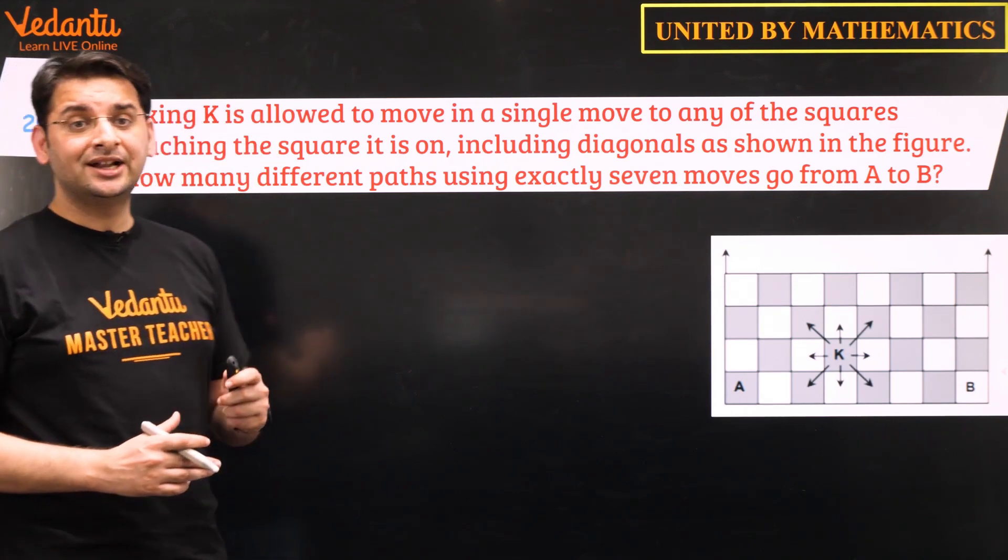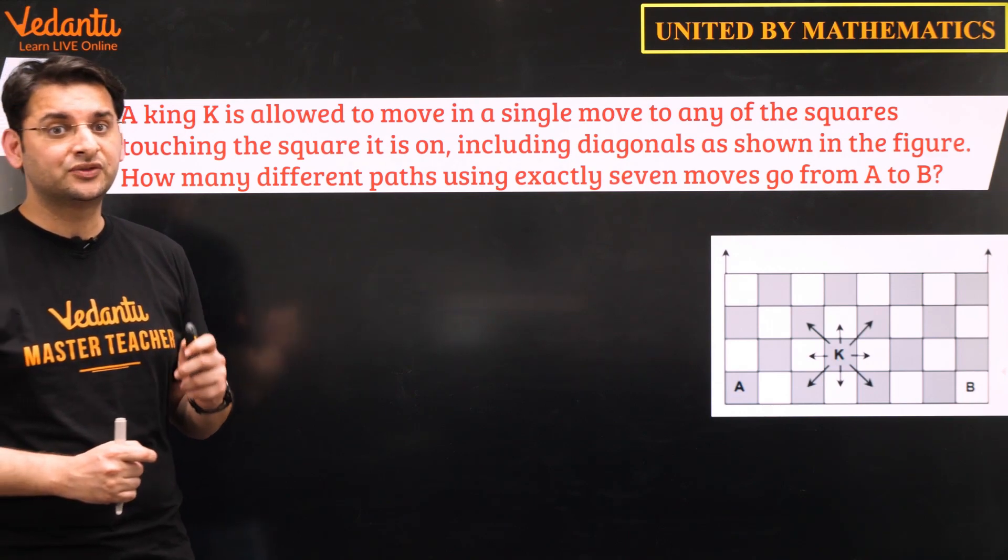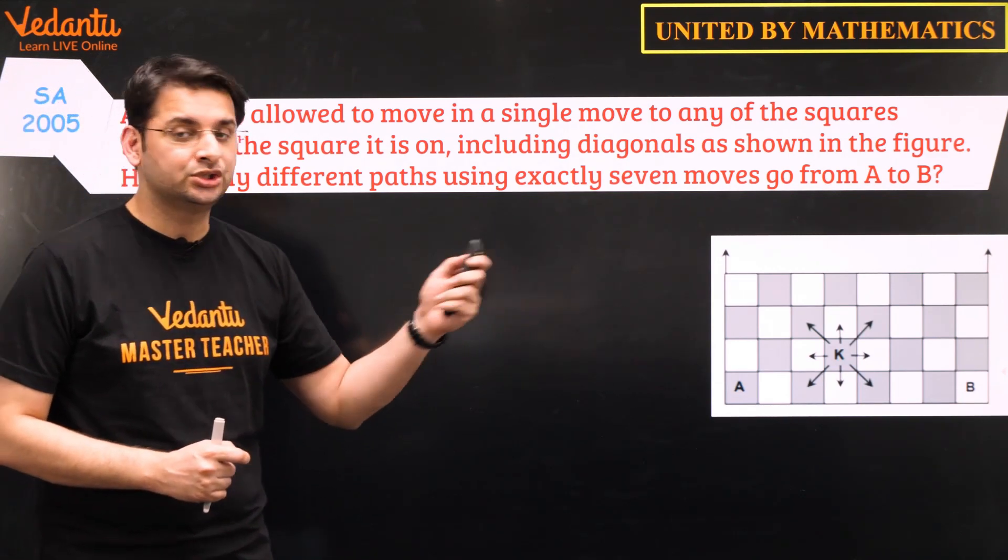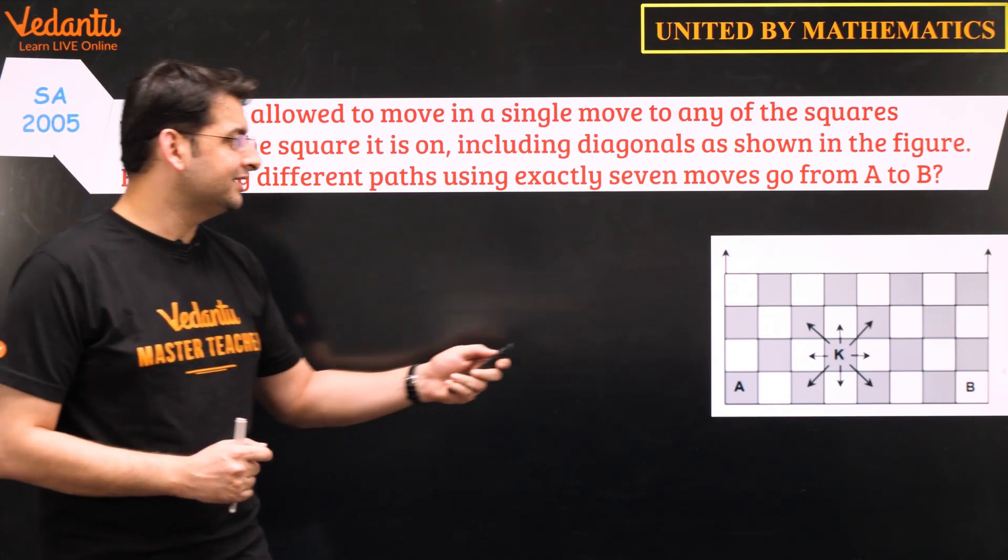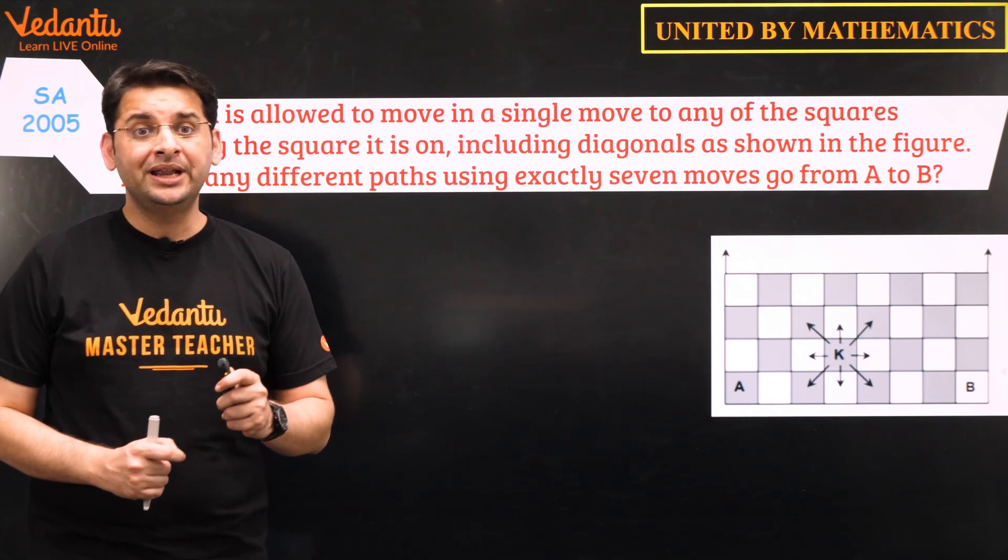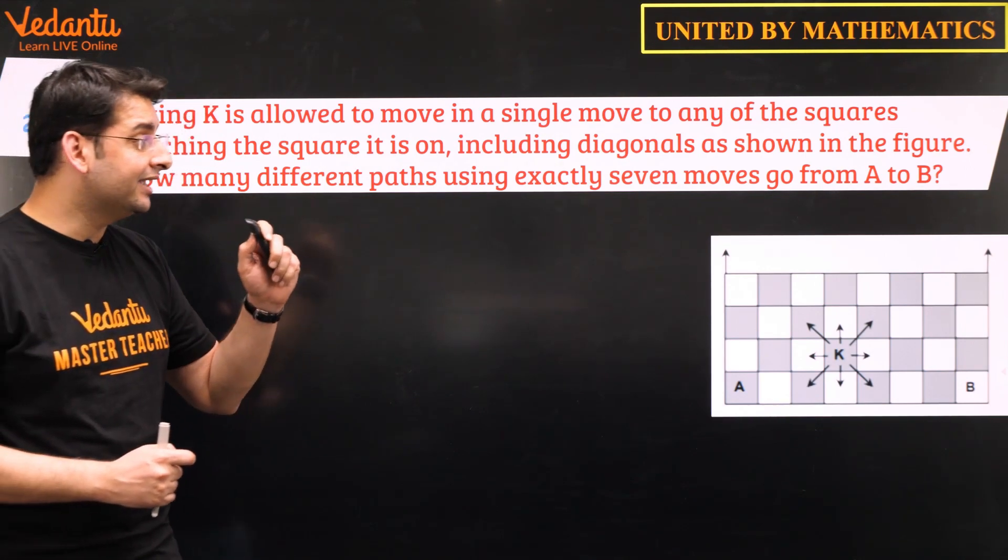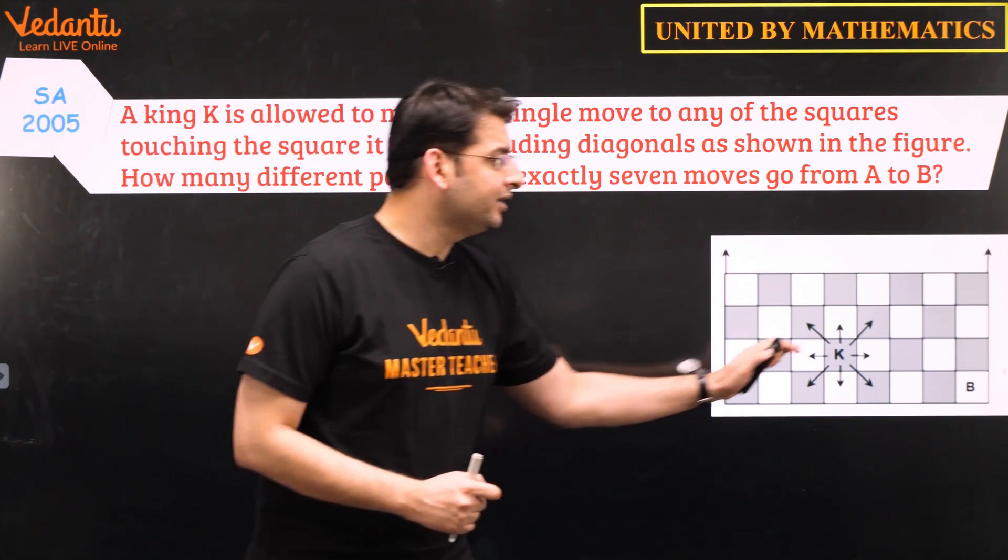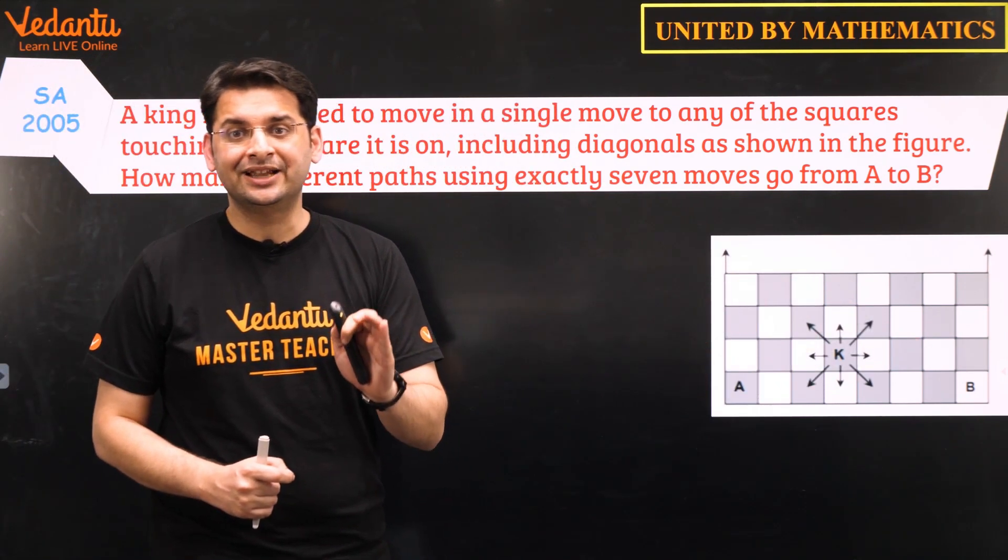The question says a king is allowed to move in a single move to any of the squares touching the square it is on, including diagonals as shown in the figure. So this is a usual king move in a chess game. The question is how many different paths using exactly 7 moves go from A to B? So from A to B in exactly 7 moves.